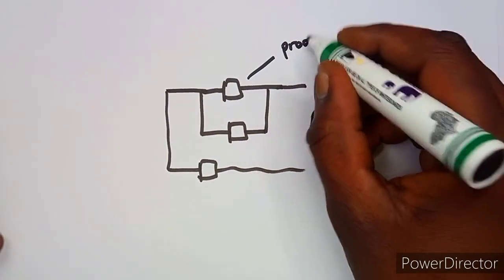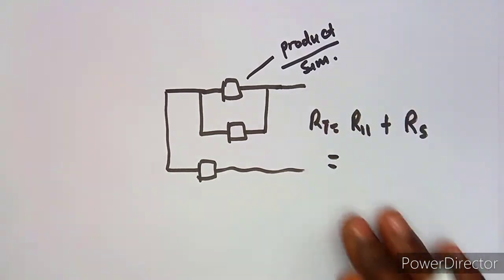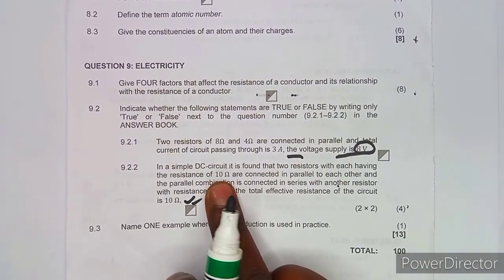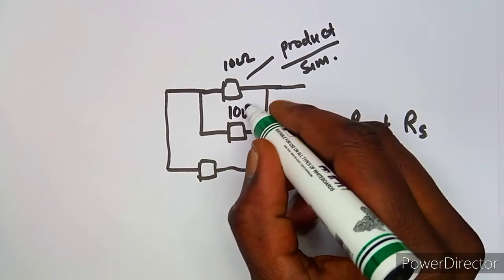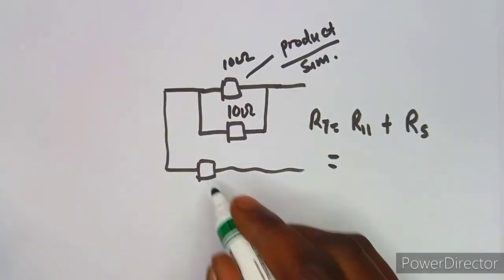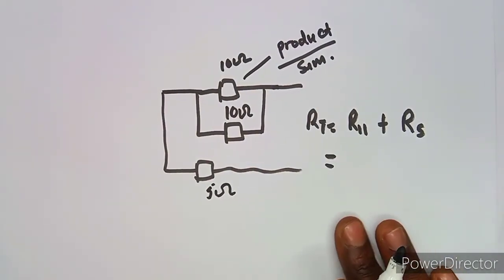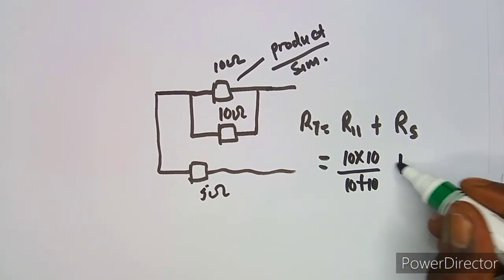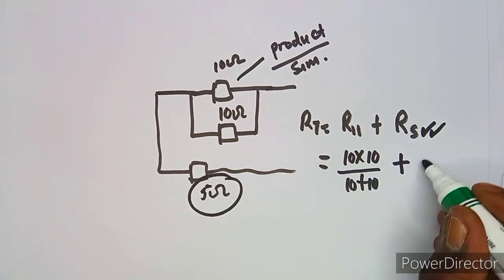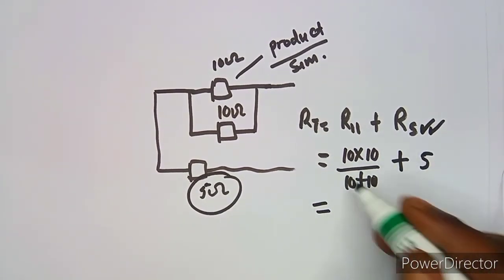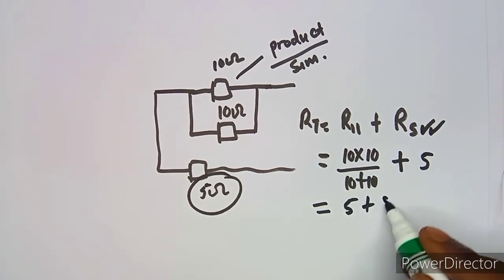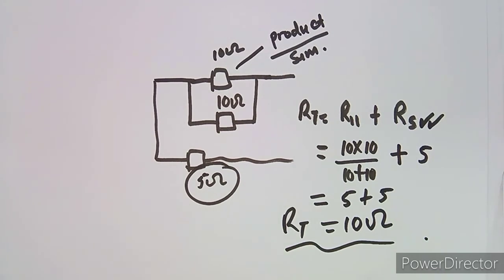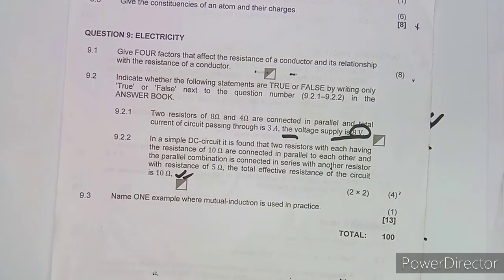The effective resistance equals R_parallel + R_series. Using product over sum for the parallel part: (10 × 10) / (10 + 10) = 100/20 = 5 ohms. Adding the series resistor: 5 + 5 = 10 ohms. This matches the stated effective resistance of 10 ohms, so statement 9.2.2 is TRUE.